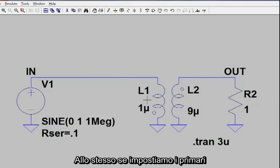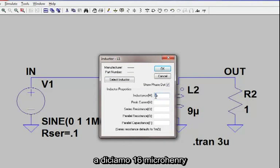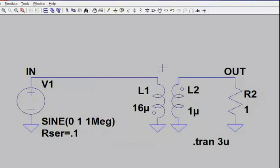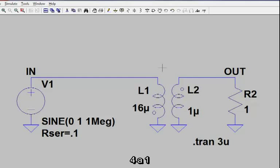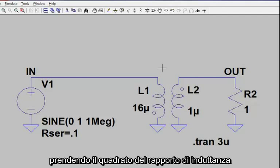Likewise, if the primary is modeled with, say, 16 micro-Henrys and the secondary is modeled with 1 micro-Henry, we can now view that as a 4 to 1 turns ratio by taking the square root of the inductance ratio.